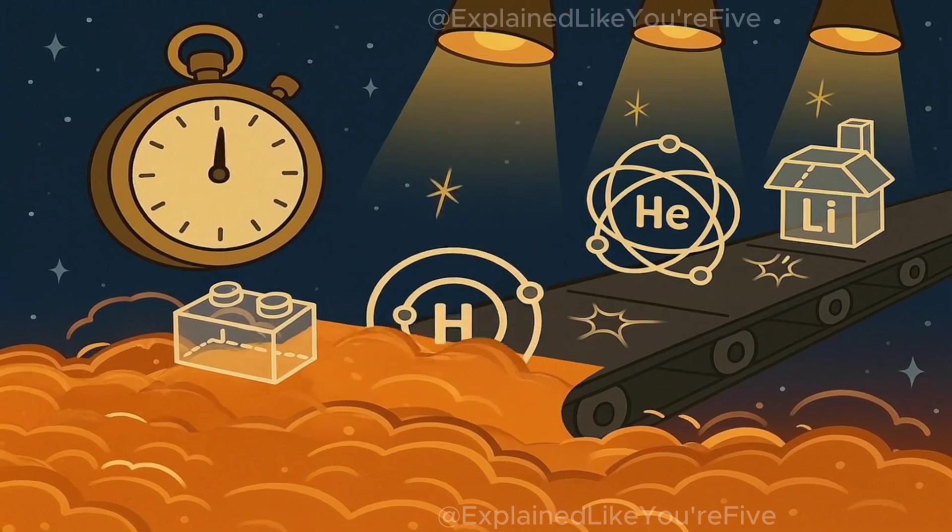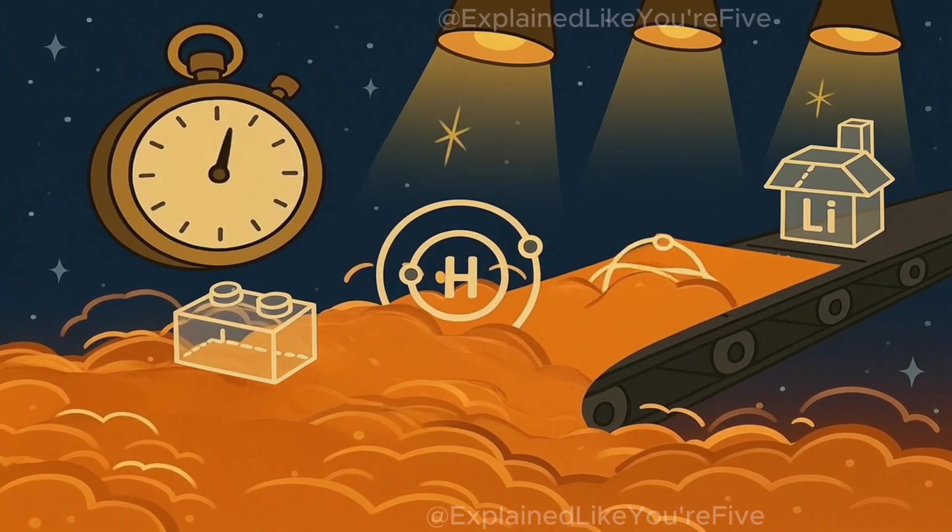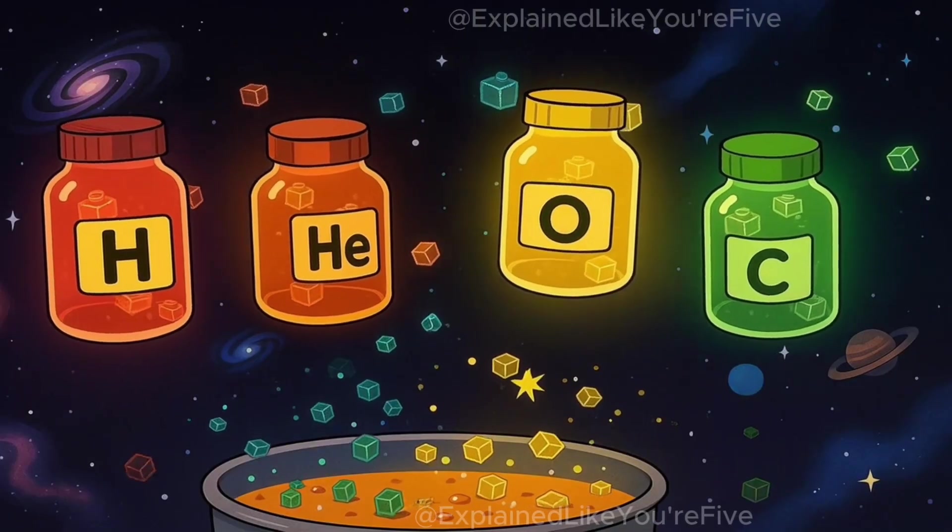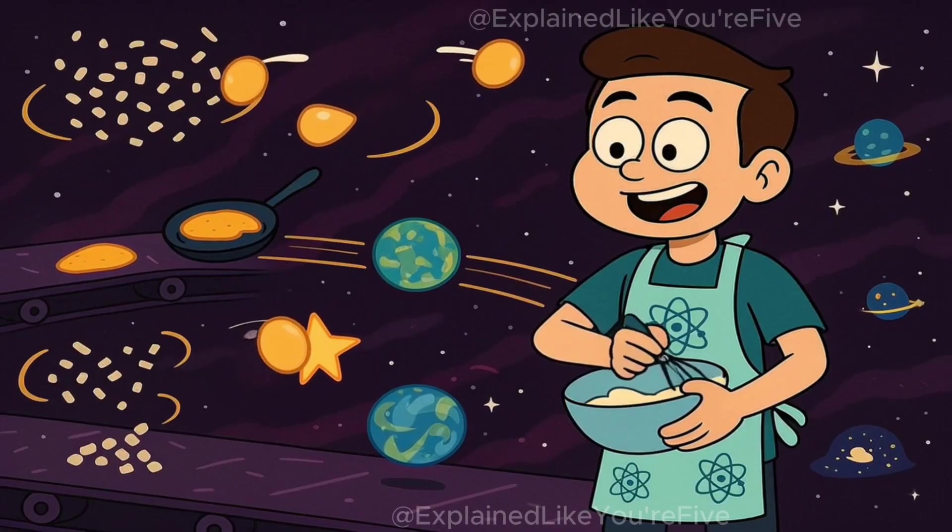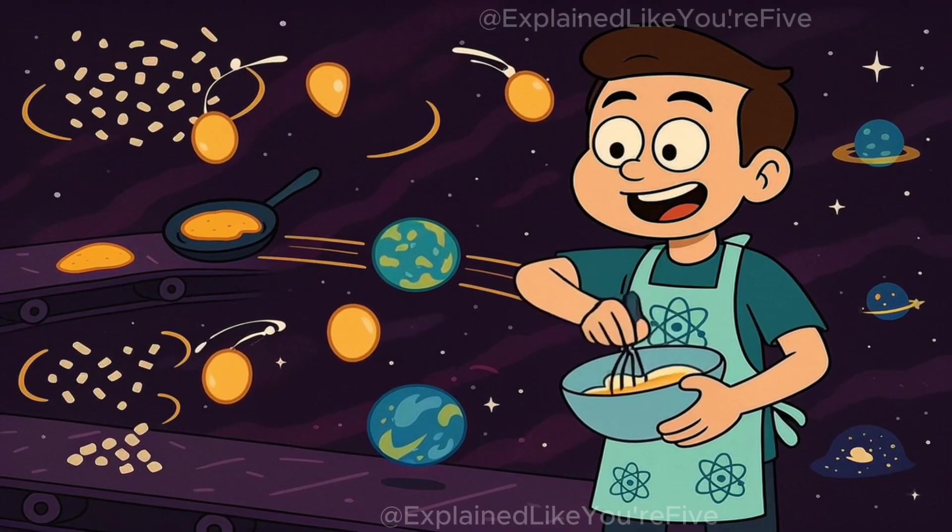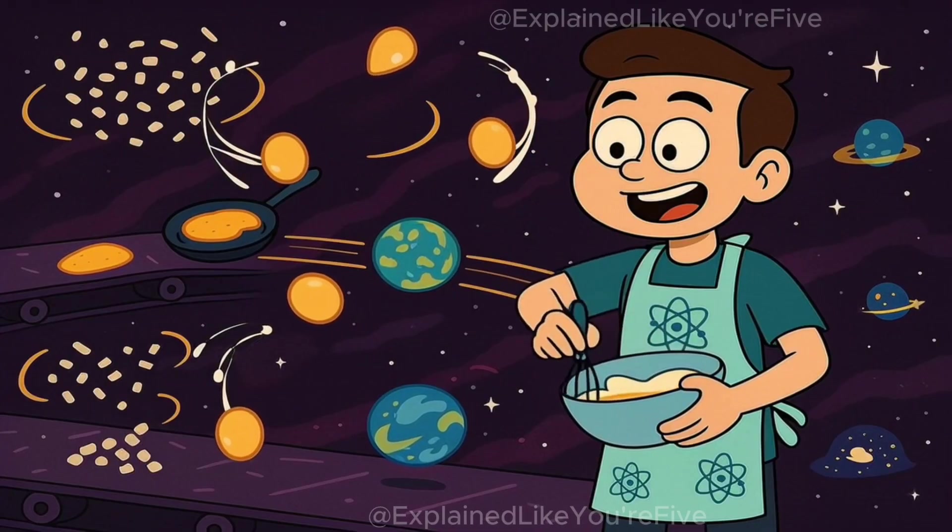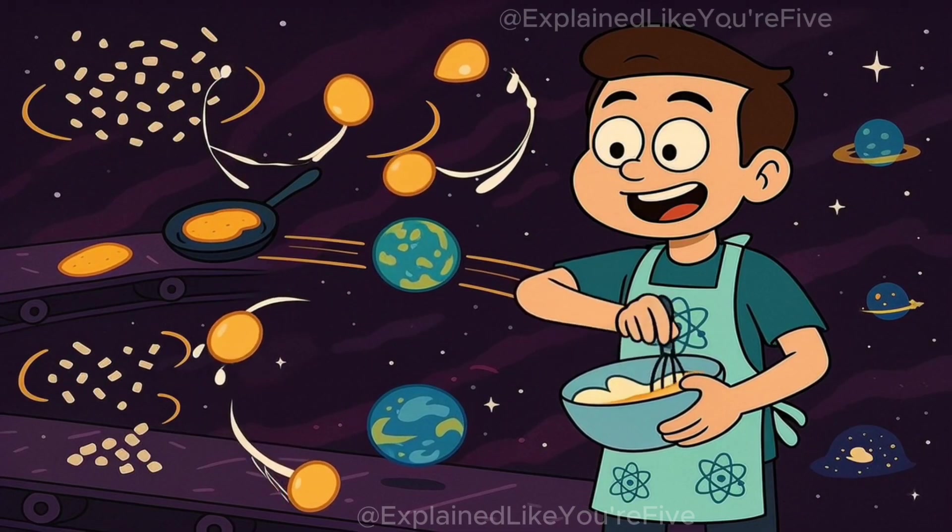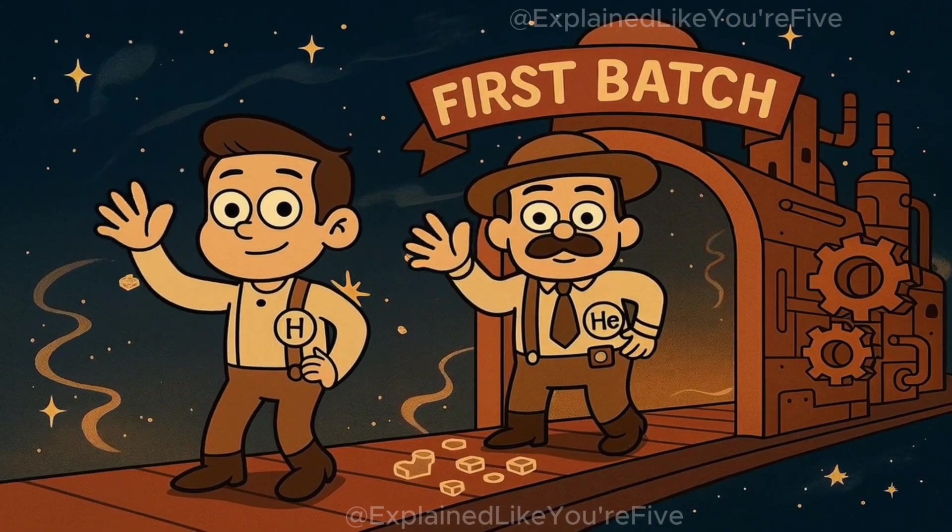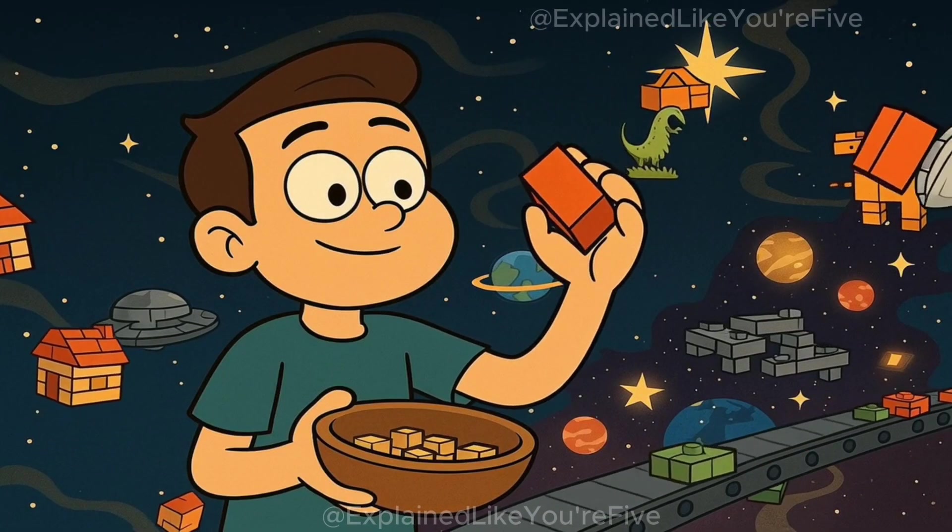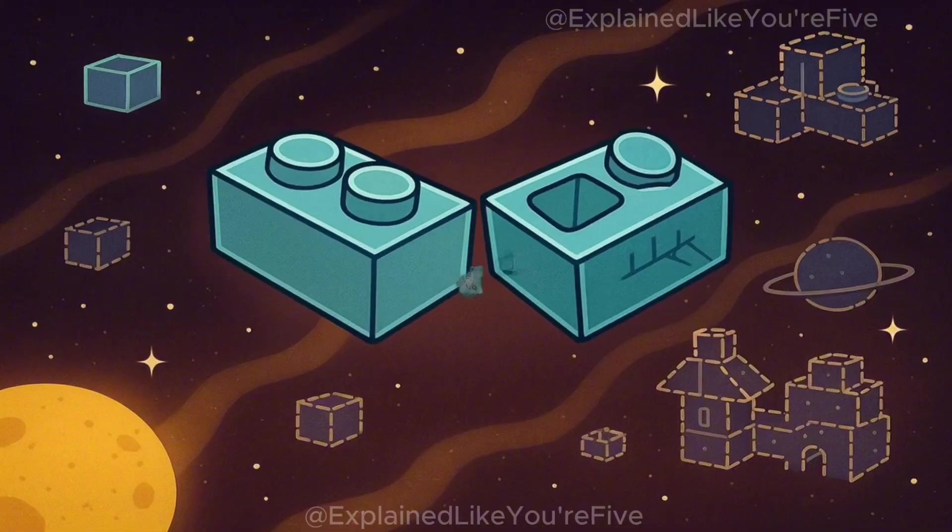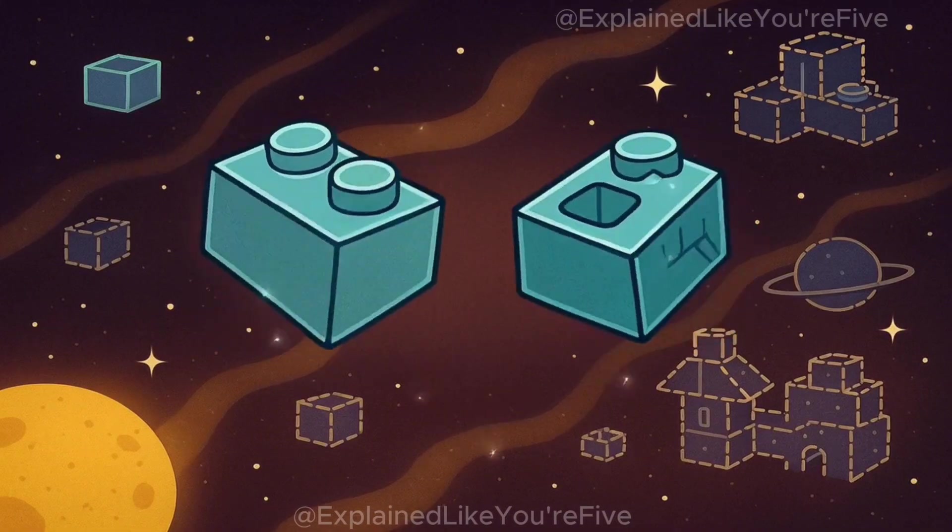Now, the most important thing that happened during these first few minutes was the creation of the simplest elements. Elements are like the basic ingredients for everything in the universe. Just like how you need flour and eggs and milk to make pancakes, the universe needed basic elements to eventually make stars, planets, and everything else. The first elements created were hydrogen and helium. Hydrogen is the simplest element, like the most basic Lego block you can have. Helium is just slightly more complicated, like two Lego blocks stuck together.